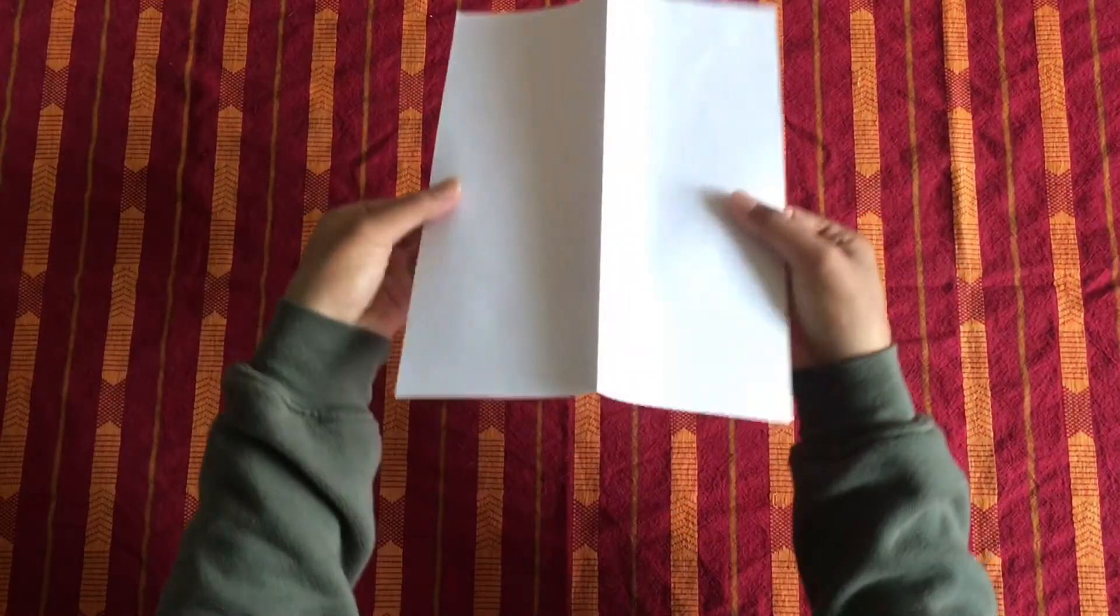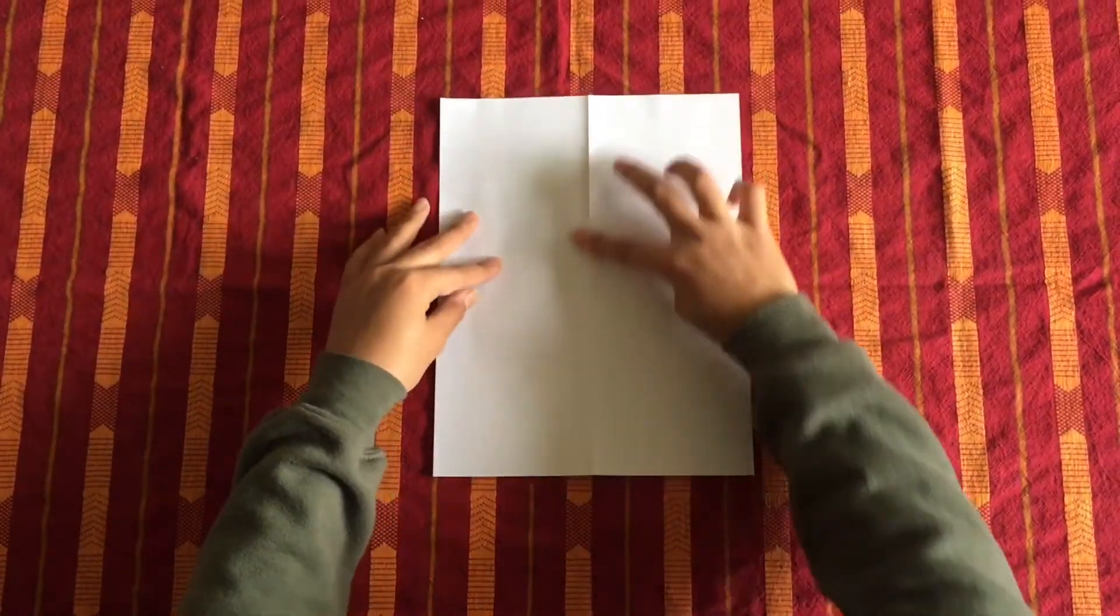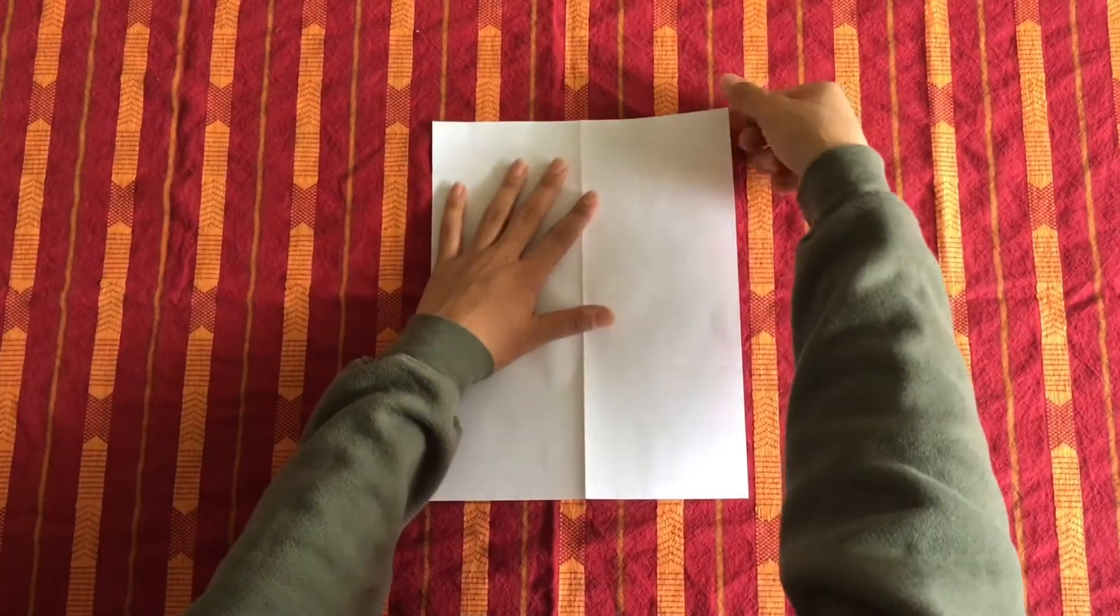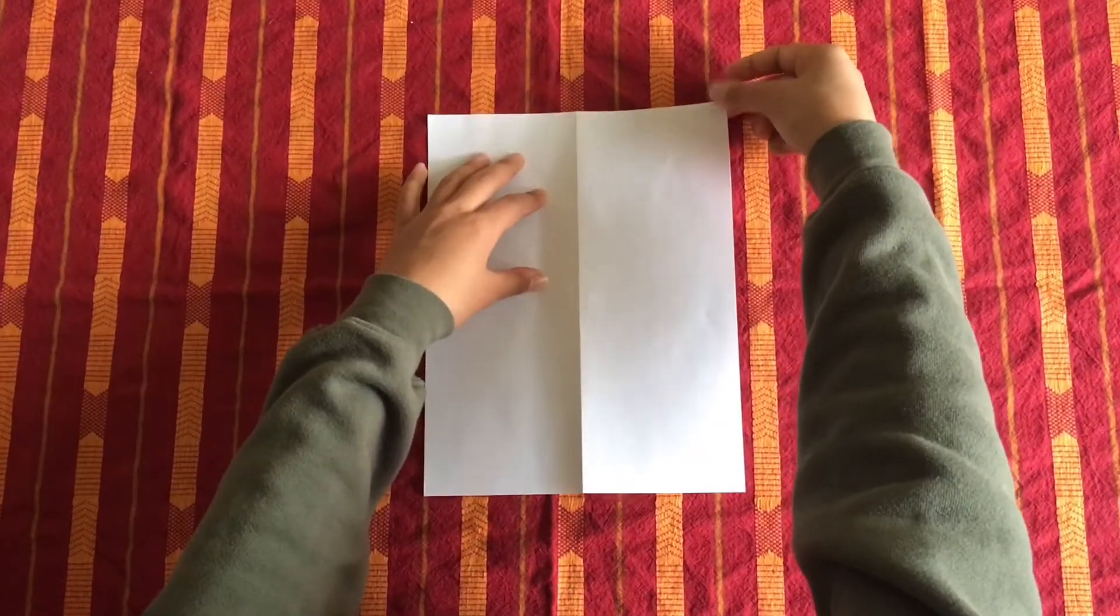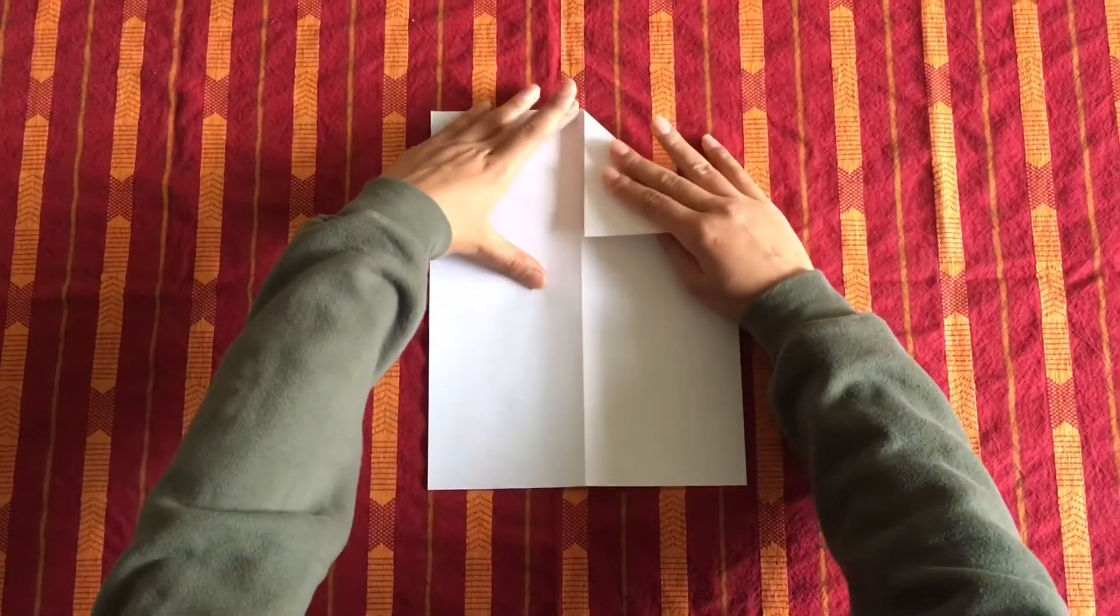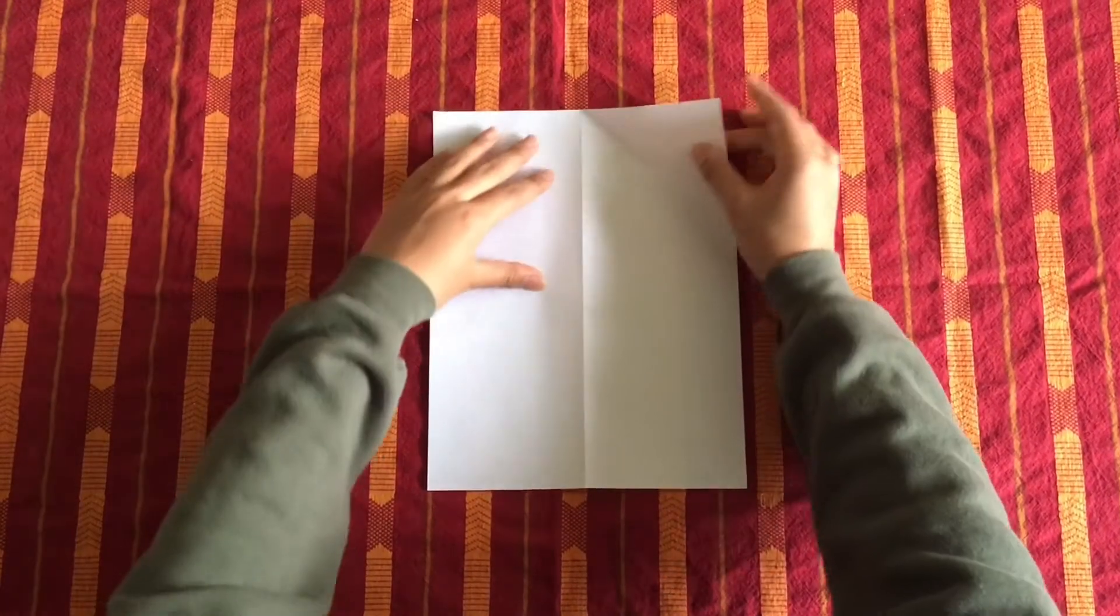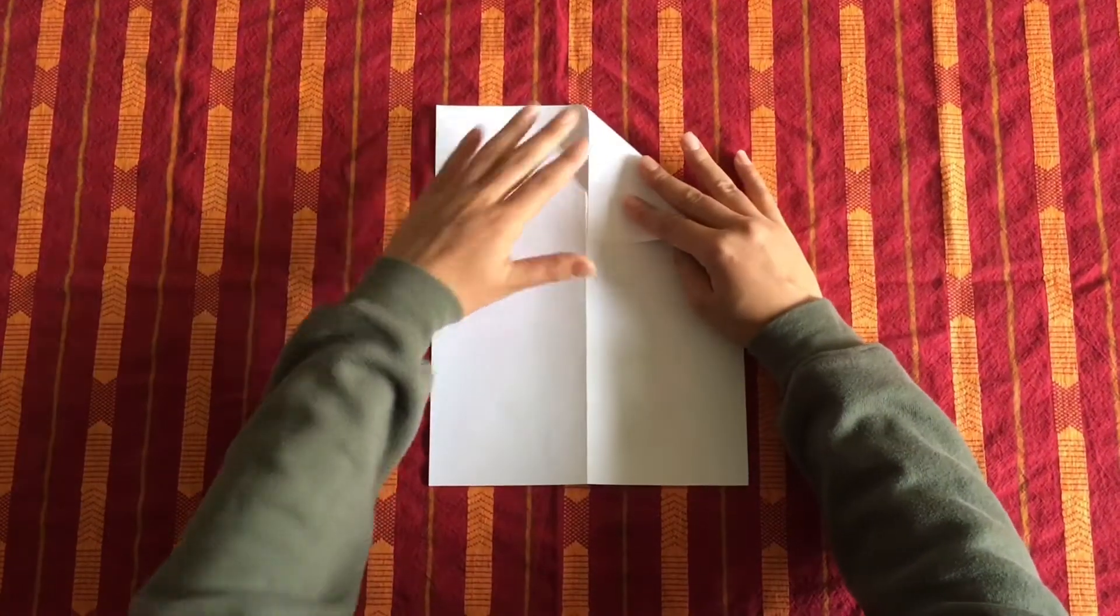Then when you open up, you'll have a nice good crease. You can even flatten it back out. What you're going to do is take this corner and fold it down to that middle crease.